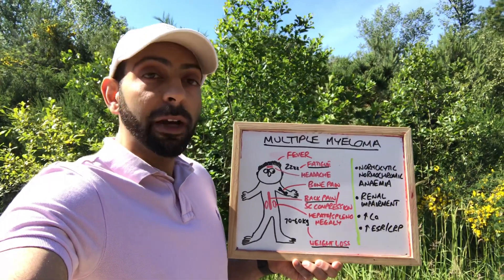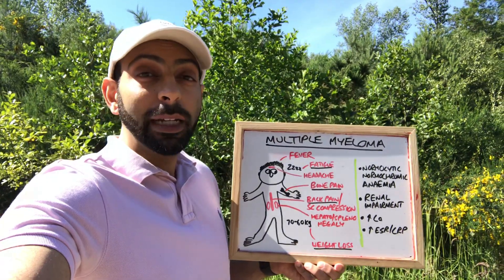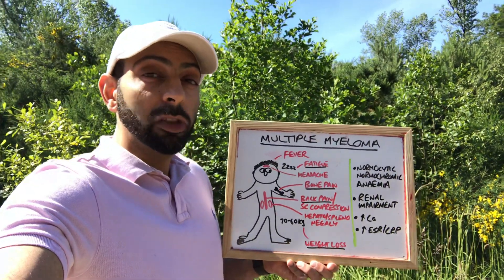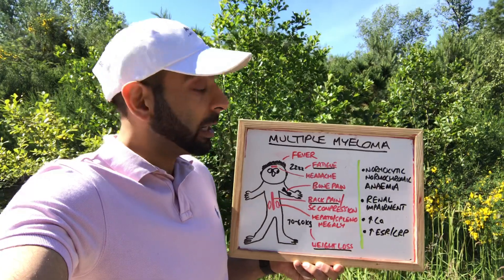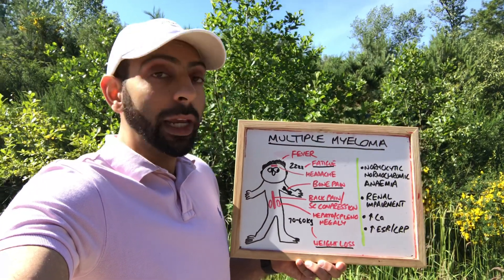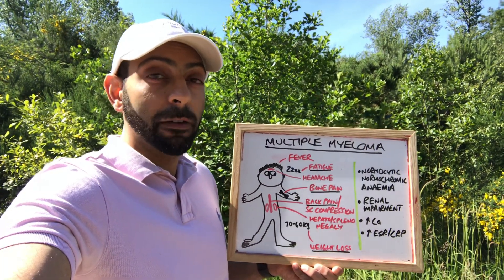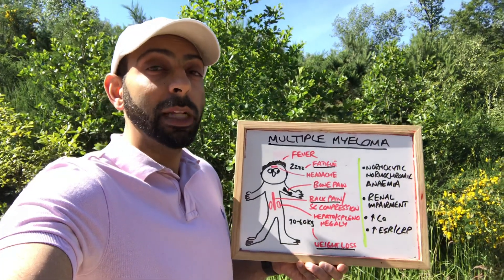On examination, you might find hepatomegaly, you might find splenomegaly, you might find lymphadenopathy. These can all be things that make you think about multiple myeloma in patients when they present. Weight loss is a big one as well — a lot of people present with weight loss, again a non-specific feature of this condition.